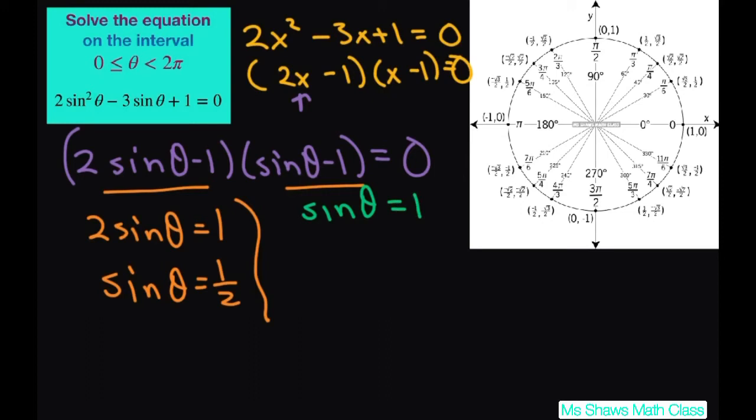We're looking for where sin θ is 1/2. Remember sine is your y-coordinate. So where is y = 1/2? Here and here. That means your solutions are θ = π/6 and θ = 5π/6.